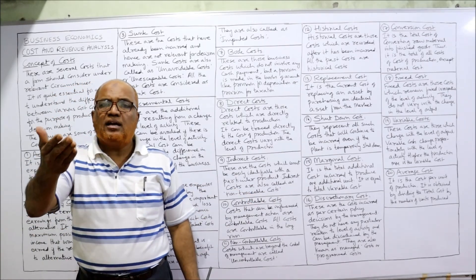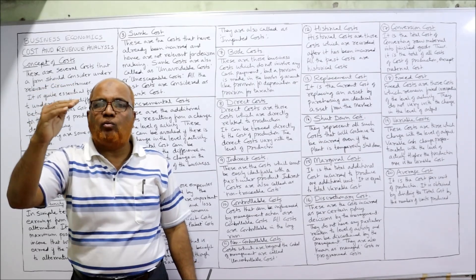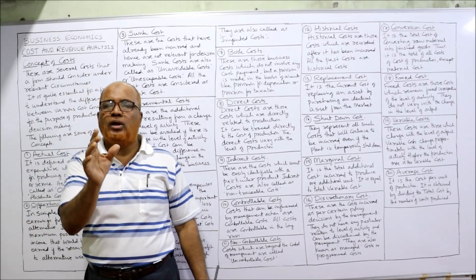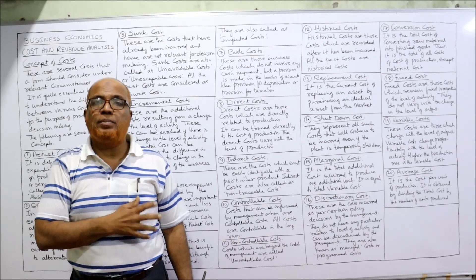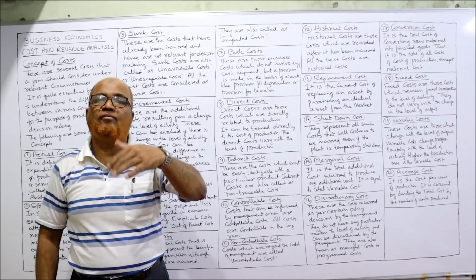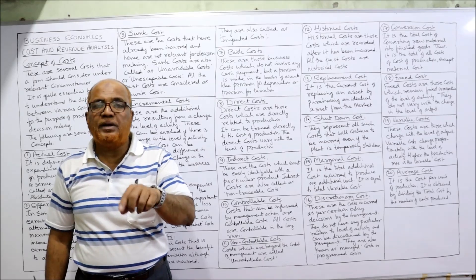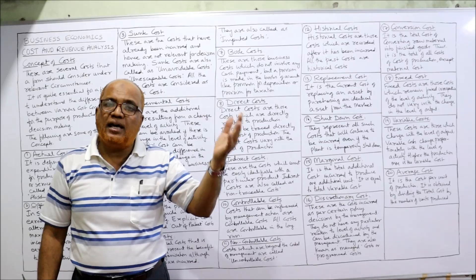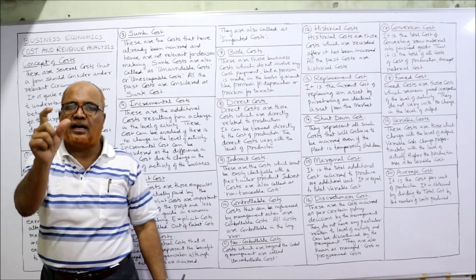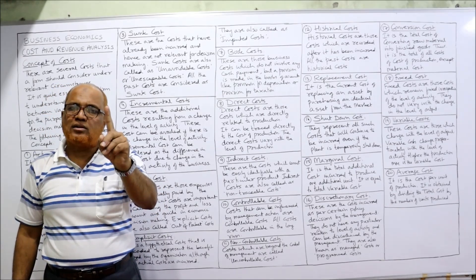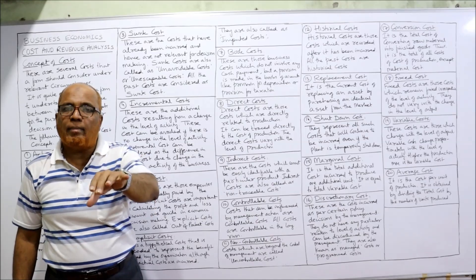Marginal cost is the increase in cost when we increase output by one unit. For example, suppose we are producing 100 units and spending 1,000 rupees. If we produce one extra unit — 101 units — the cost becomes 1,100 rupees. So the marginal cost of that additional unit is 100 rupees. When we increase output by only one unit, only variable cost changes; fixed cost does not change. So in other words, we can say marginal cost is essentially the variable cost.